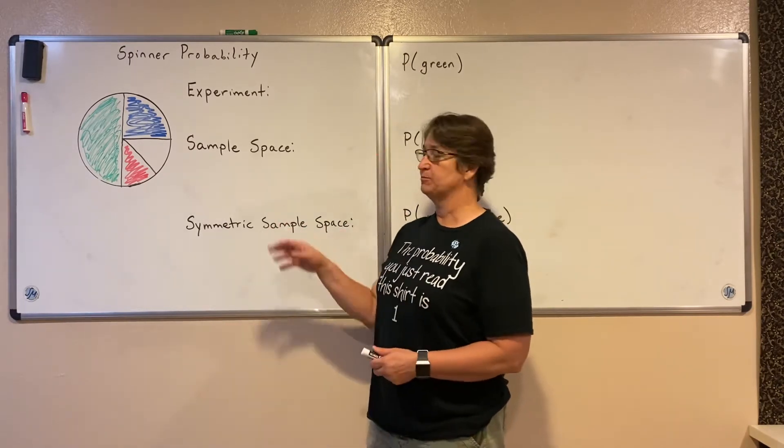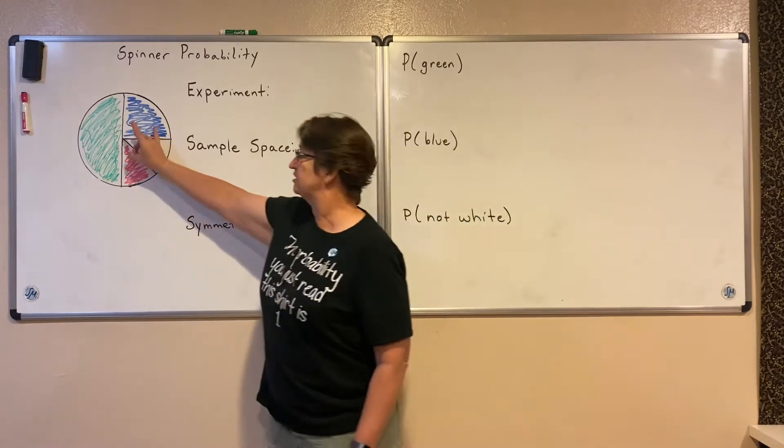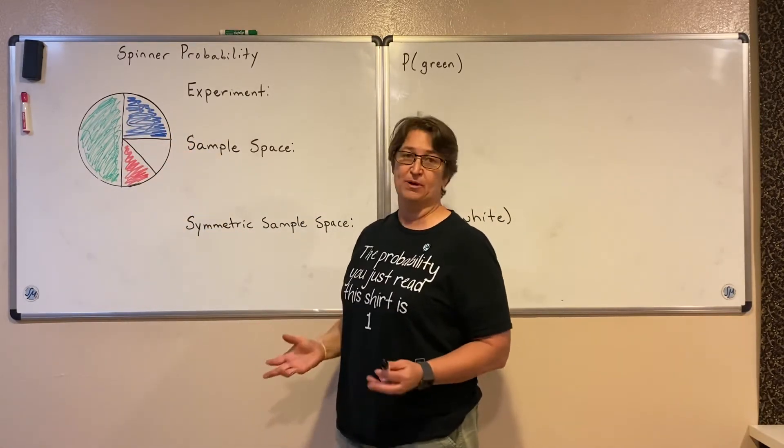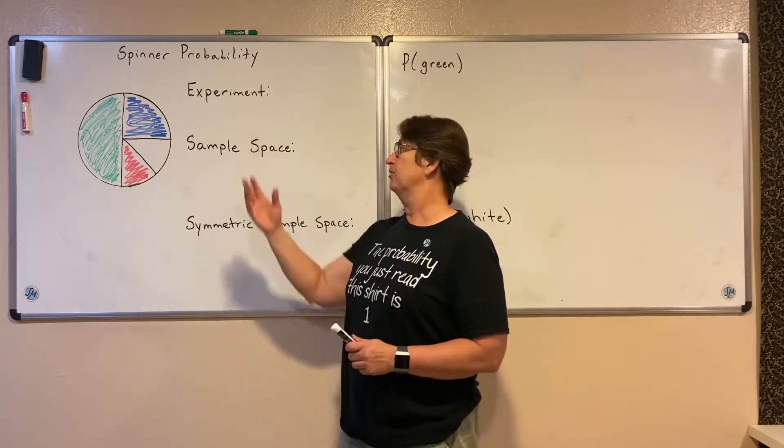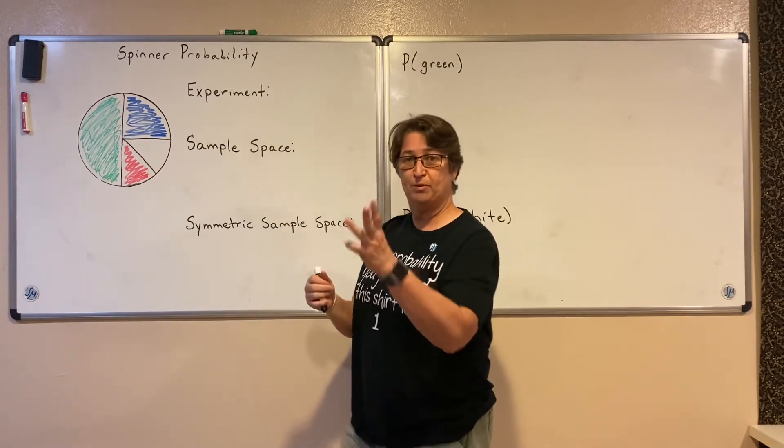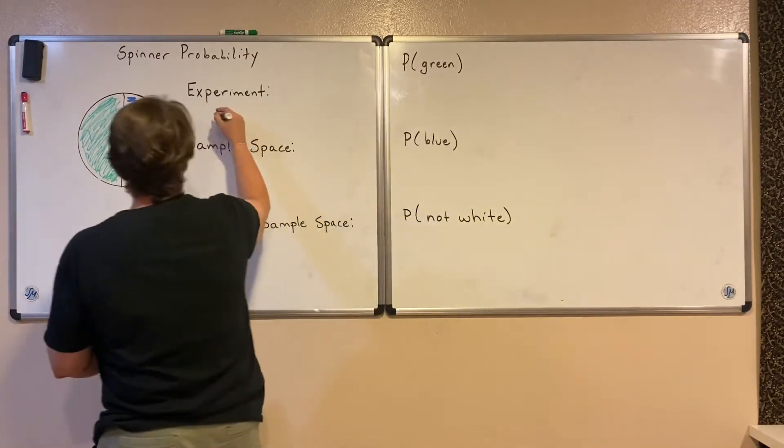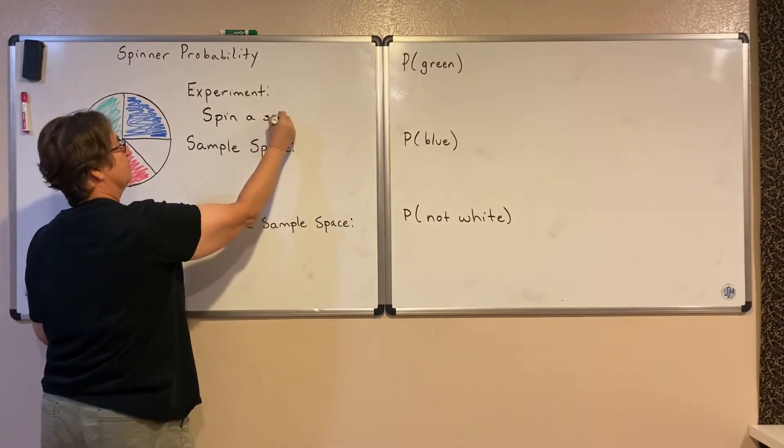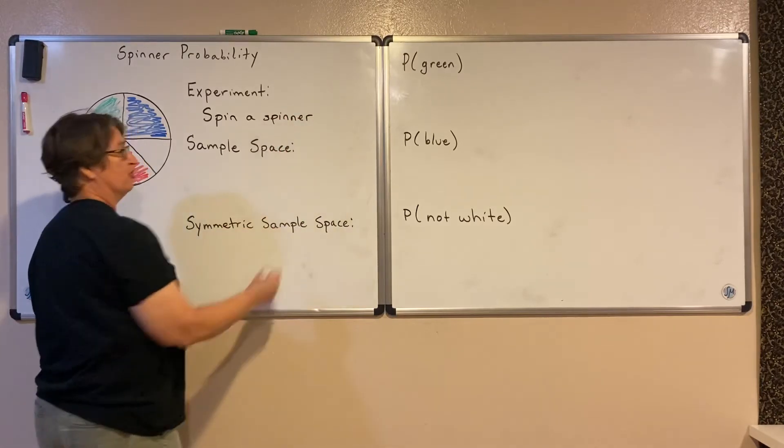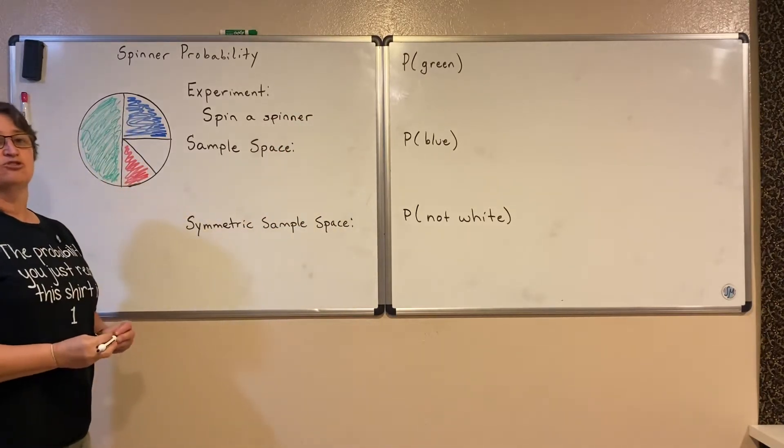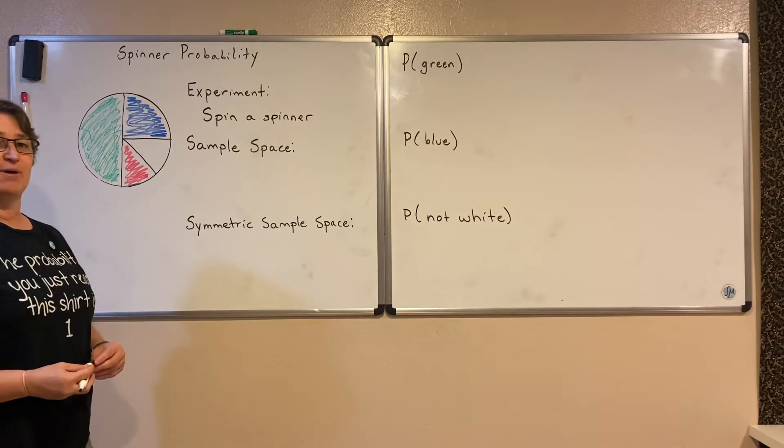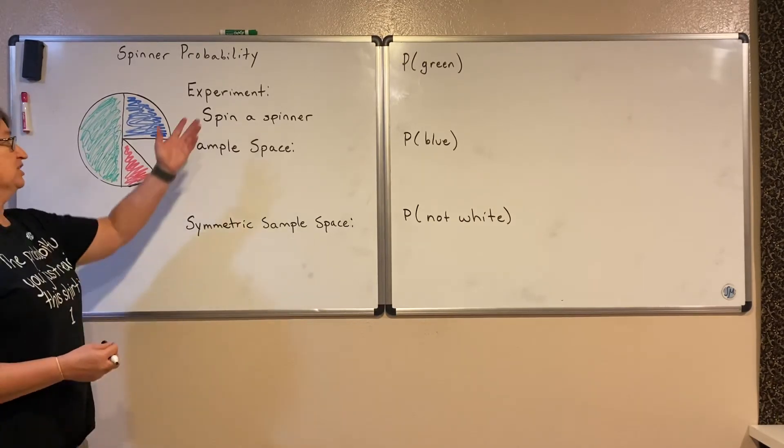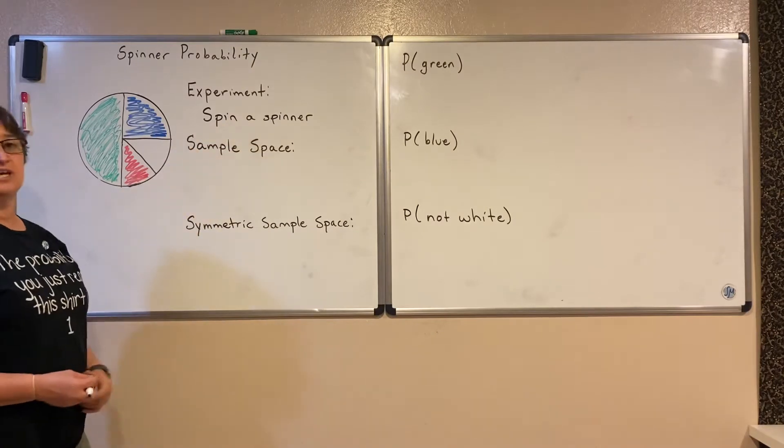So here we have a spinner, and we're just going to spin that spinner. The experiment in this problem is spinning that spinner. The outcome from spinning the spinner is determined by chance. So when an outcome is determined by chance, that process is the experiment.